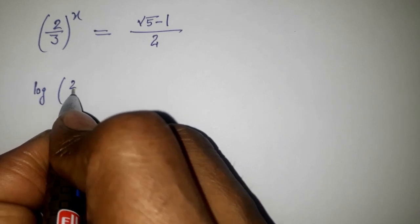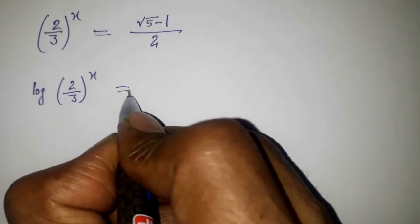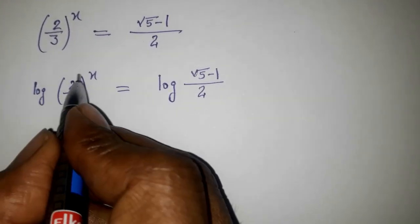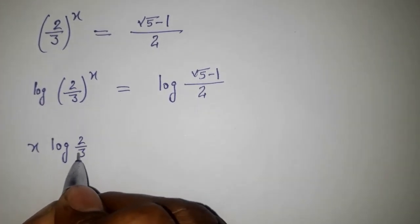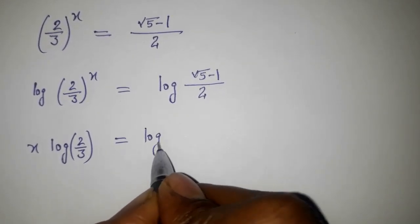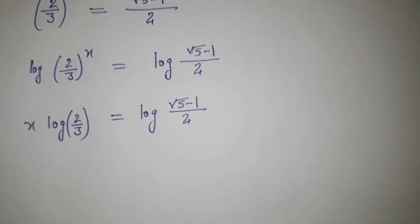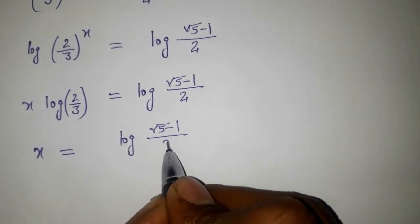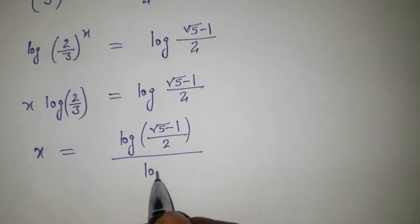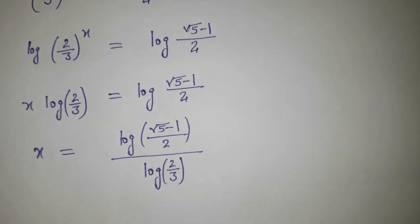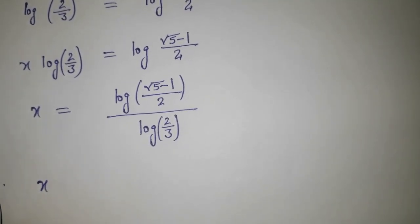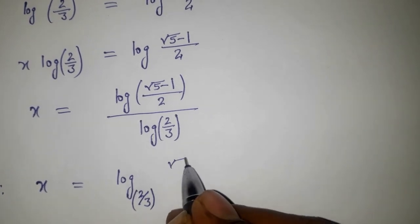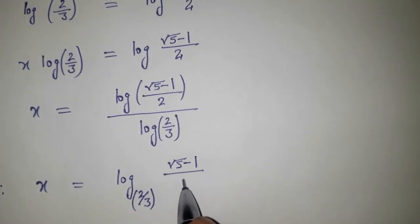Now I am taking log on both sides. So log of (2/3) to the power x equals log of (root 5 minus 1) divided by 2. The exponent x comes in front: x times log(2/3) equals log((root 5 minus 1)/2). Therefore x equals log((root 5 minus 1)/2) divided by log(2/3), which can be written as x equals log base (2/3) of (root 5 minus 1) divided by 2.